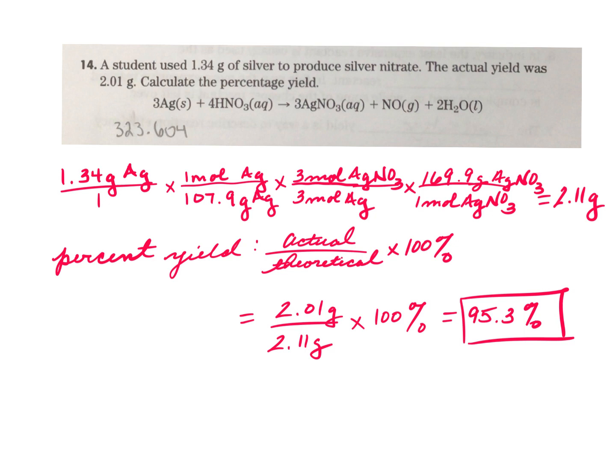And then you're going to go from moles of silver nitrate to grams of silver nitrate and that's going to give you the theoretical yield. That means like if everything went perfectly and you got as much of the silver nitrate out as possible, you should get 2.11 grams. I carried it out to two decimal places or three sig figs because that's what you were given in the problem.